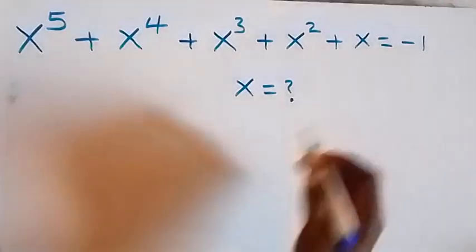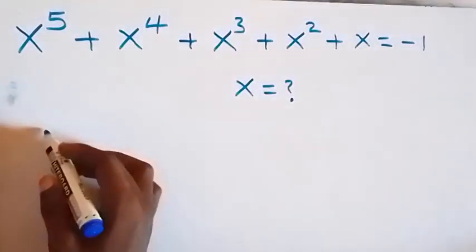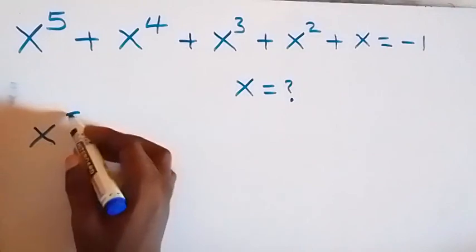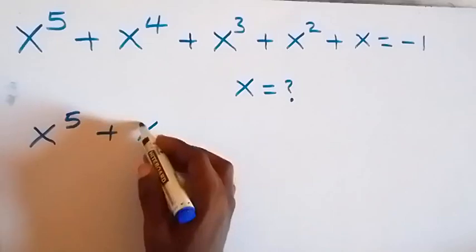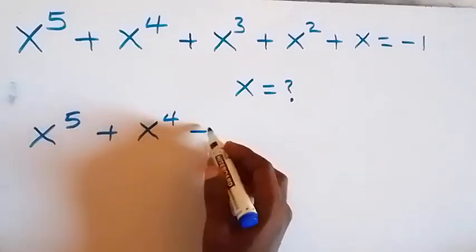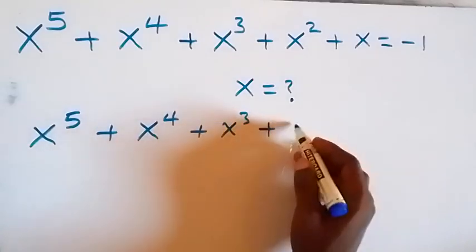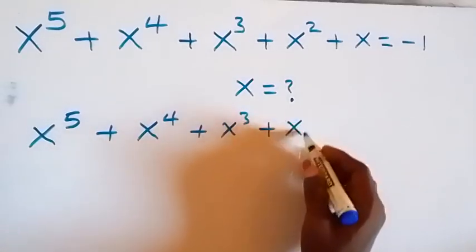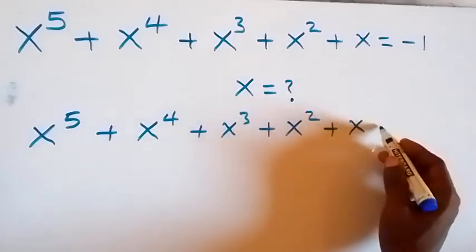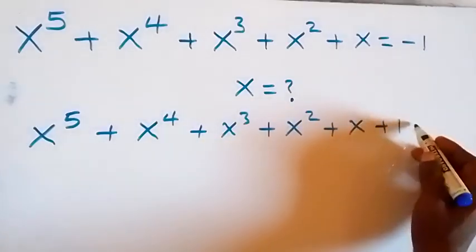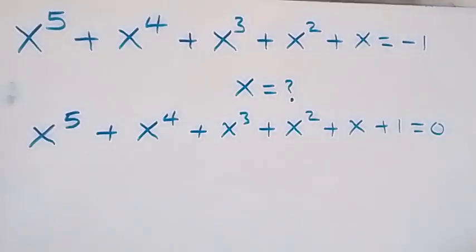From here, we can take minus 1 to this side and this will become x raised to power 5 plus x raised to power 4 plus x raised to power 3 plus x squared plus x plus 1, now equals to 0.